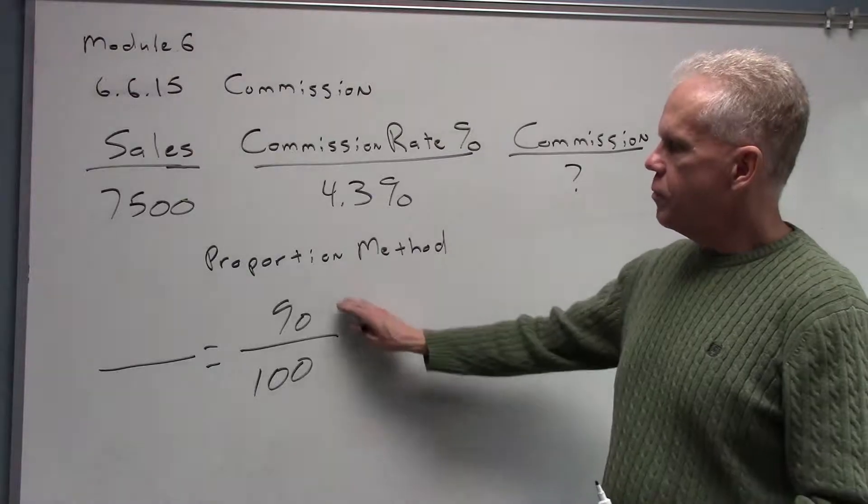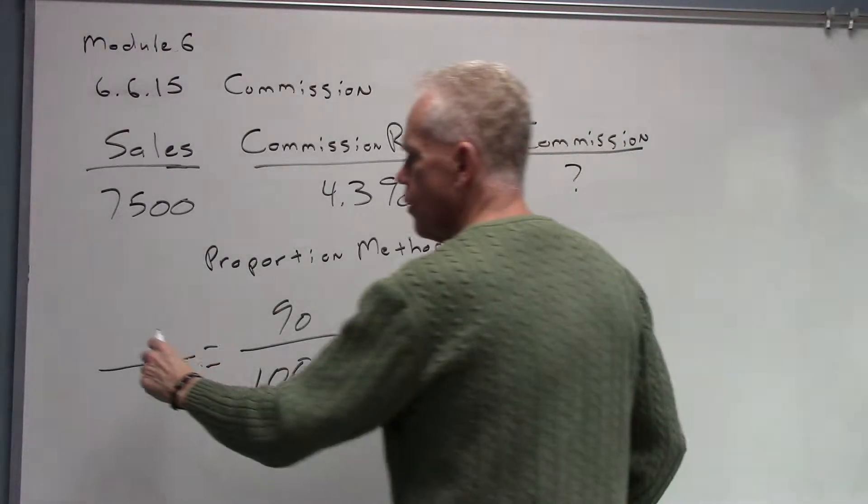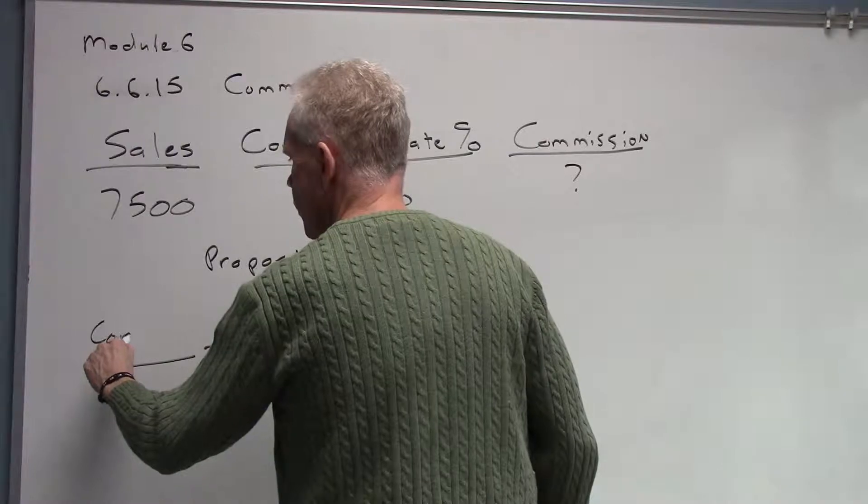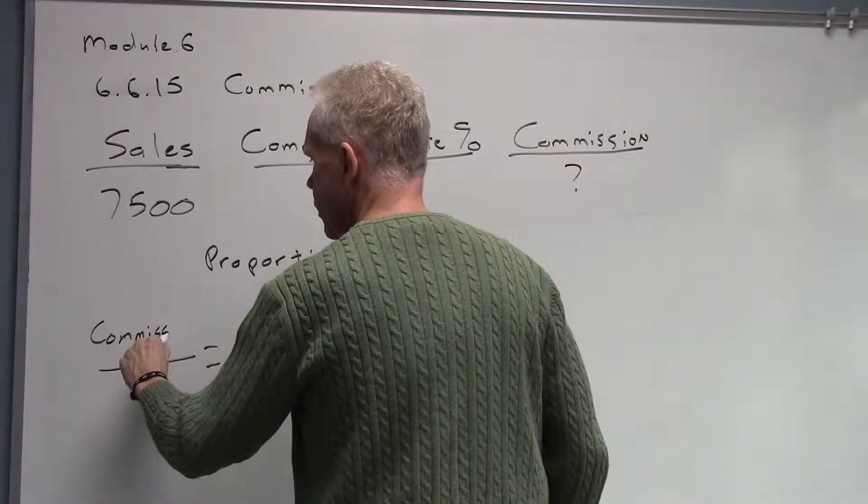We're going to start that proportion with percent over 100, percent over 100. Over here, our top amount will actually be our commission. This is what we're going to be looking for in this problem.